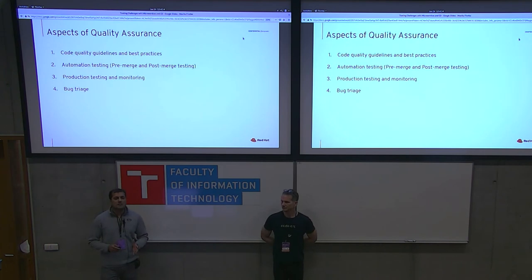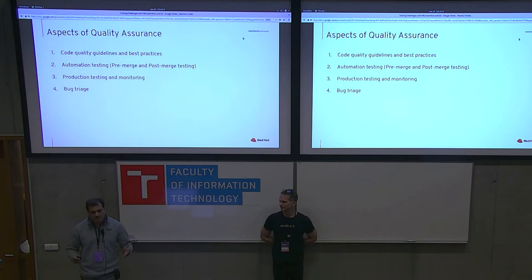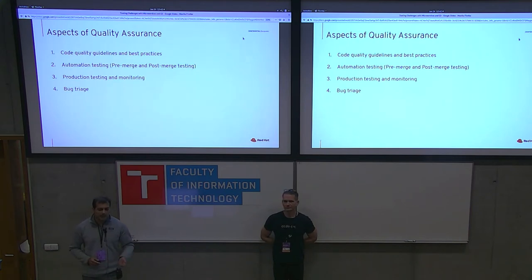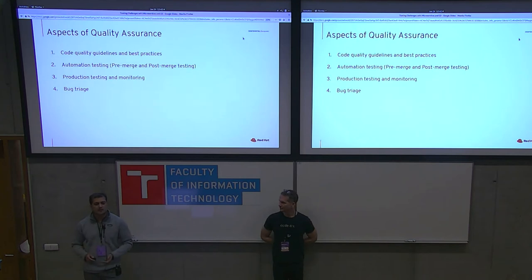Given these goals, how do we achieve them? We identified four focus areas of quality assurance. First: defining code quality guidelines and best practices. Second: automation testing, focusing on both pre-merge and post-merge. Third: production testing — testing the service deployed in production and monitoring it. And lastly: bug triage. We'll go over each of these areas in detail.